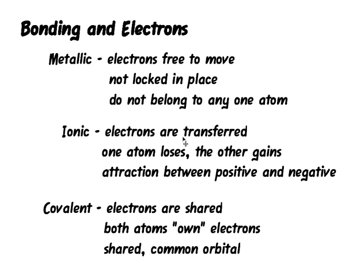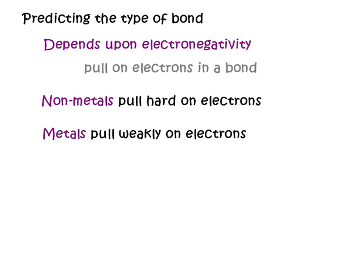Let's talk in more detail about what causes these different types of bonding and how to identify it when we're looking at a particular substance. If we want to predict the type of bond, it's going to depend upon what we call electronegativity. Electronegativity is how much pull an atom has on the electrons when it's in a bond.